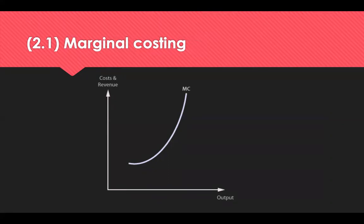The marginal cost of production is the change in total cost that comes from making or producing one additional item. The purpose of analysing marginal costs is to determine at what point an organisation can achieve economies of scale. Manufacturers are often asked to examine the cost of adding one more unit to their production scheme, because at some point the benefit of producing one additional unit and generating revenue from it will bring the overall cost of producing that line item down. The key is to find that optimal level as quickly as possible.